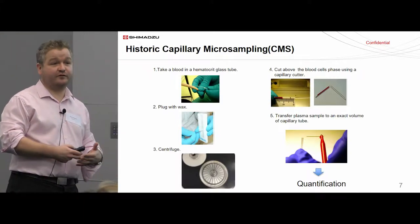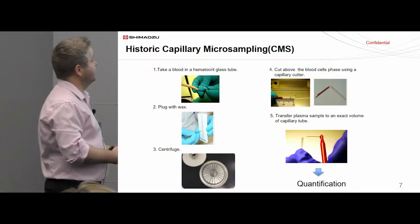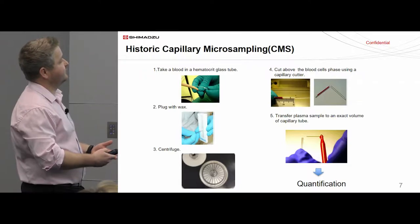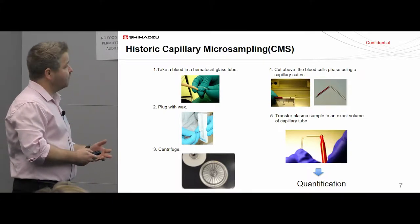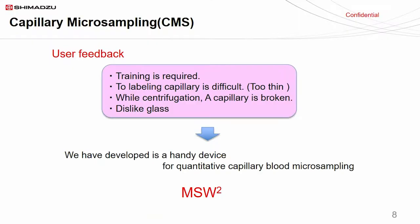The microsampling wing replaces historic capillary microsampling, where we take a hematocrit glass tube, plug it with wax after taking the sample, centrifuge, snap the tube, and take this aliquot of plasma for quantitation. Feedback from end users showed that training was required with a lot of variability depending on how you were trained. Labelling of the capillary is incredibly difficult because the tubes are very thin, things are often broken while centrifuging, and there was a general dislike for glass — though I only found out today that plastic alternatives are available.